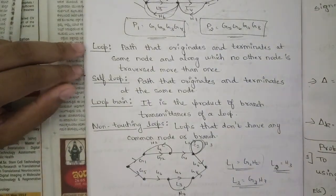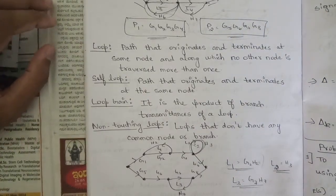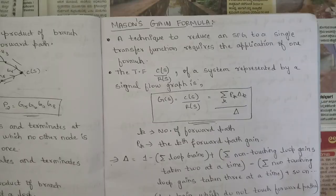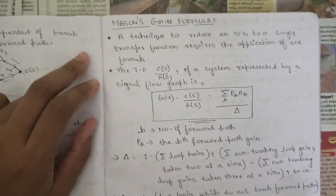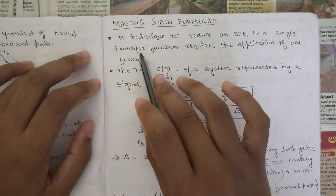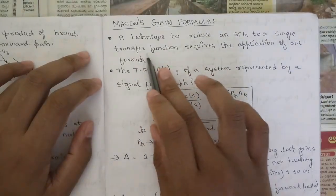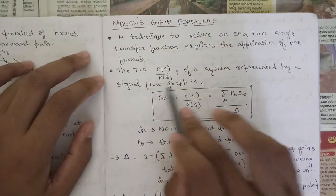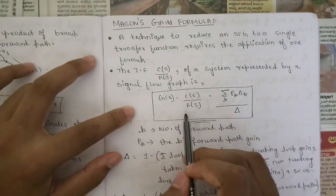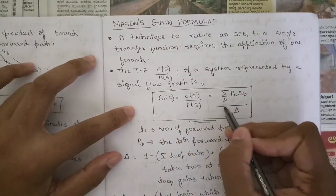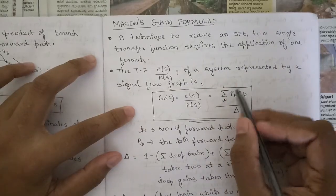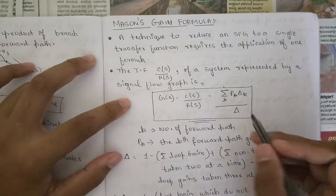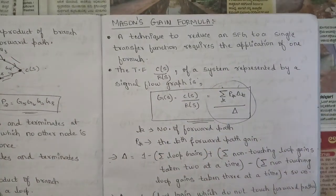Now we have one more important formula to solve signal flow graphs — Mason's gain formula. This formula reduces a signal flow graph to a single transfer function. The transfer function C(s)/R(s) is given as: G(s) = C(s)/R(s) = summation of P(k)·Δk divided by Δ, where k represents the forward paths.